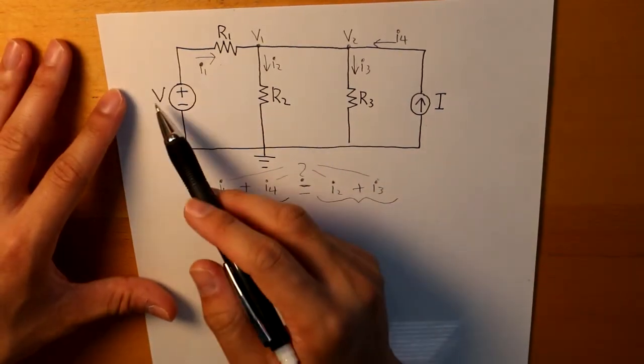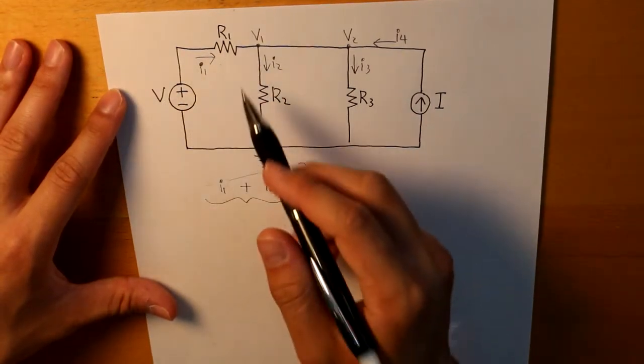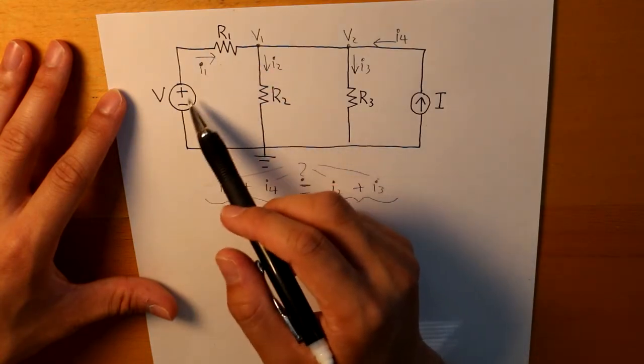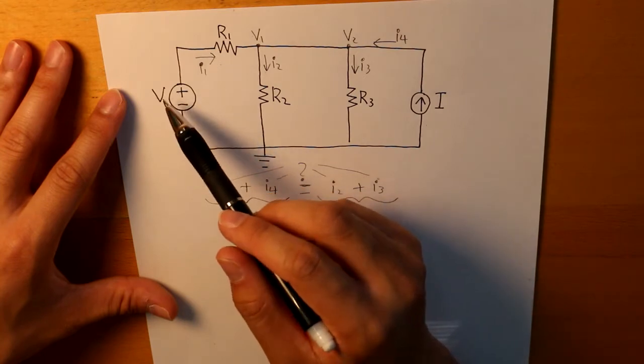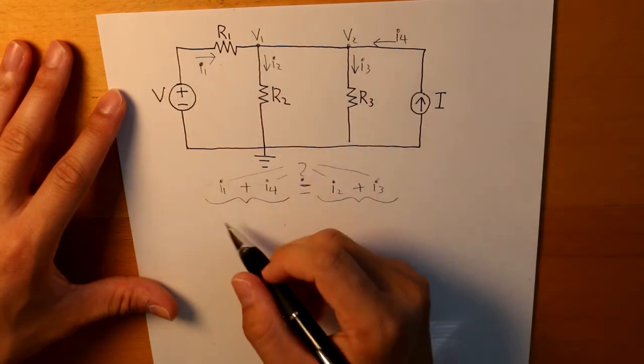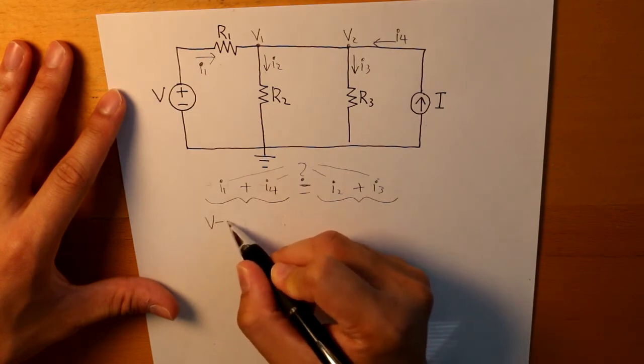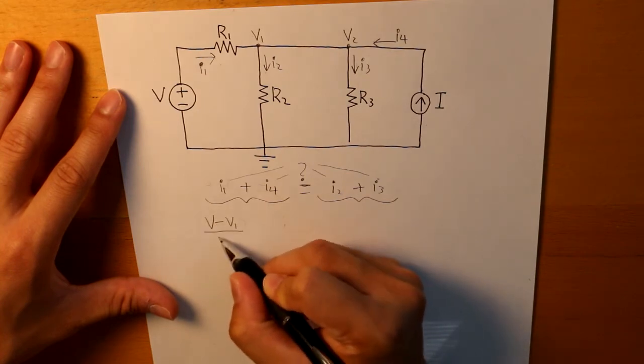So for I1, we have V divided by R1. And that will not be V divided by R1, since the current is not flowing from V to the ground, we have the current flowing from V to V1. So I1 would be represented as V minus V1 divided by R1.